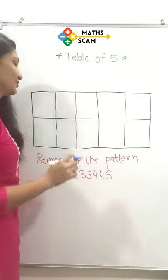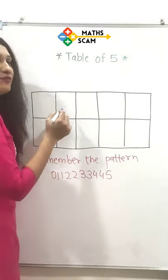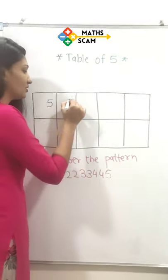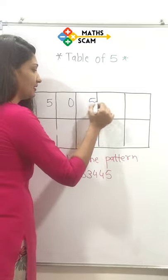Hello everyone. First, write 5050 alternative numbers on the right side.